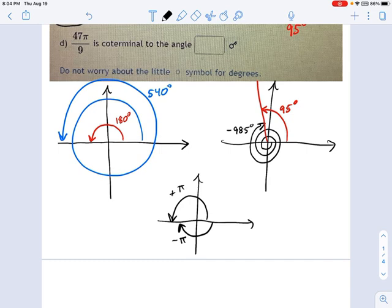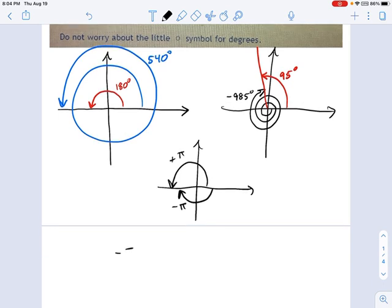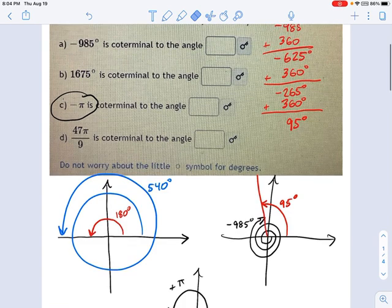Now, what did I do there? Instead of adding 360, I did this. I did negative pi plus 2 pi. When you're finding coterminals in radians, you're adding 2 pi because 2 pi is one full circle. And when you're doing coterminals in degrees, you're adding 360 degrees because that is a full circle right there. We're unwinding that spiral, so to speak. So that's the idea with coterminals.